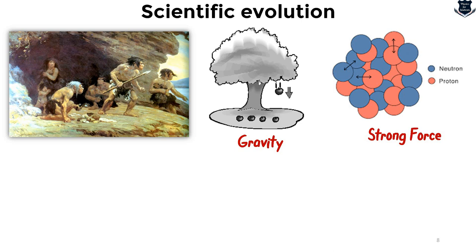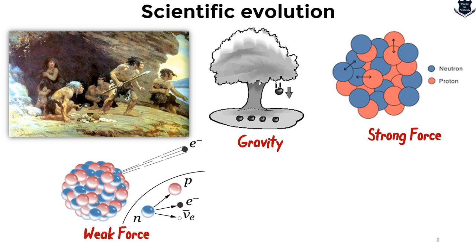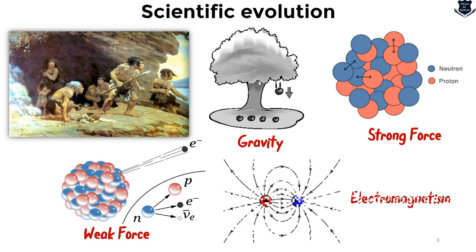The fusion of electricity and magnetism by Maxwell, the quest for a unified theory by Einstein, and the unification of particles and interactions — all were striving for a grander, more comprehensive understanding. The four fundamental forces — gravity, the strong force, the weak force, and electromagnetism — are what we understood, and we always strive to unite them.